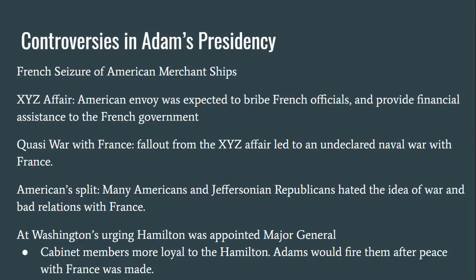The Quasi-War was not universally popular back in the U.S., as Jeffersonian Republicans hated the idea of war and bad relations with the French. Former President Washington urged Adams to appoint Hamilton as Major General, who began to make preparations for a large-scale war against the French. However, despite being in the same political camp, Adams and Hamilton did not get along at all. Hamilton thought little of Adams, and Adams thought Hamilton was too much of a political schemer and too eager for war with a powerful European nation. Within Adams' own camp were individuals more loyal to Hamilton than to him, including the Treasurer, who went behind Adams' back to support Hamilton's preparations for war. Eventually, Adams was able to reach a peace agreement with France, and shortly thereafter he fired Hamilton's supporters.